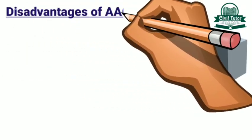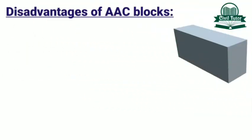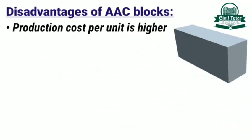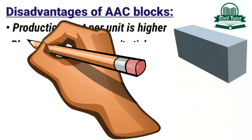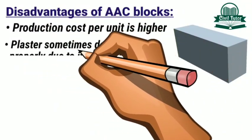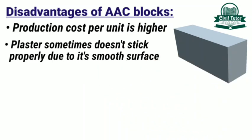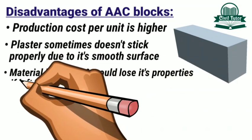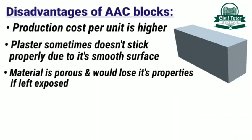Disadvantages of AAC blocks: production cost per unit is higher; plaster sometimes does not stick properly due to its smooth surface; and the material is porous and would lose its properties if left exposed.